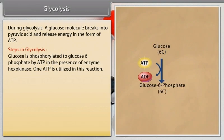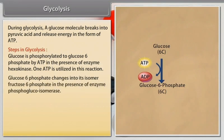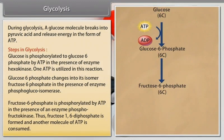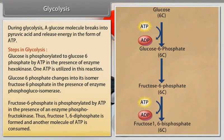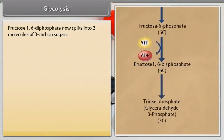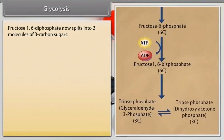One ATP is utilized in this reaction. Glucose-6-phosphate changes into its isomer fructose-6-phosphate in the presence of enzyme phosphoglucoisomerase. Fructose-6-phosphate is phosphorylated by ATP in the presence of enzyme phosphofructokinase. Thus, fructose-1,6-diphosphate is formed and another molecule of ATP is consumed. Fructose-1,6-diphosphate now splits into two molecules of three-carbon sugars.